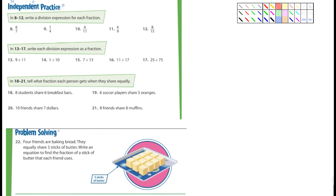Independent practice here. Write a division expression for each fraction. So I'll do number 8 here for you. That's going to be 6 divided by 7. Okay. So I want you guys to do all those: 8, 9, 10, 11, 12. So 13, 17, write a division expression as a fraction. Okay. So we have 9 divided by 11. Well, so that's going to be 9 over 11. Because remember that line right there means divided by. So if we write it from top to bottom, it's 9 divided by 11. So you guys can do 13, 14, 15, 16, 17.